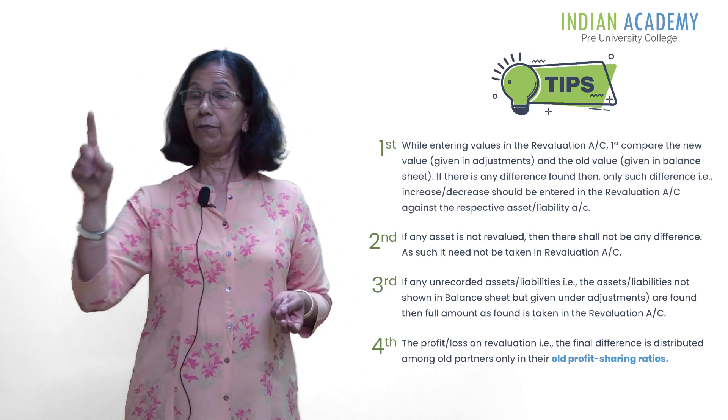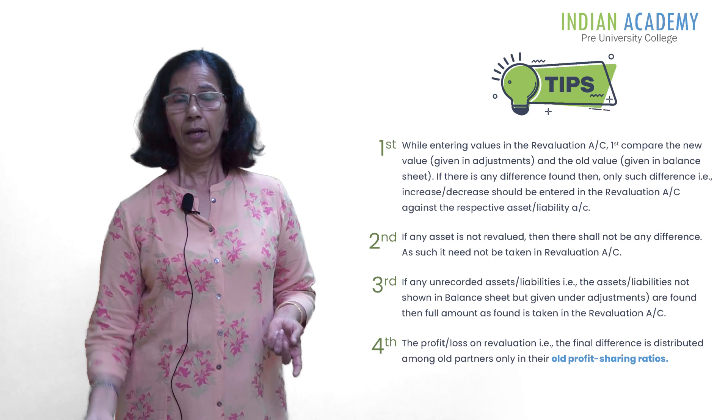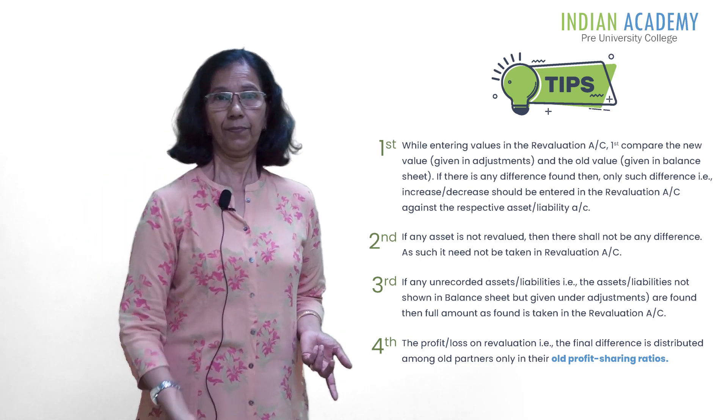The second tip concerns provision for doubtful debts related to debtors. If the provision created is increased, write it on the debit side of the revaluation account. If the provision is decreased, write it on the credit side. In case there are certain assets but no adjustment is given — no increase or decrease in value — do not write those assets in the revaluation account. Lastly, close the account: add up the credit side and the debit side. The balancing figure is the profit or loss. If the credit side of the revaluation is greater, you get a profit, which should be divided among old partners in the old ratio.